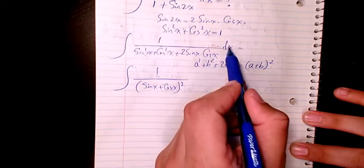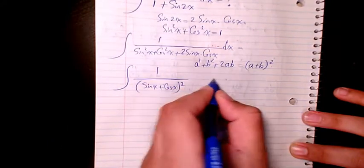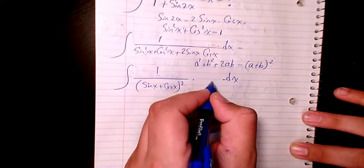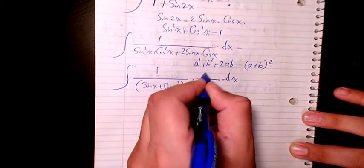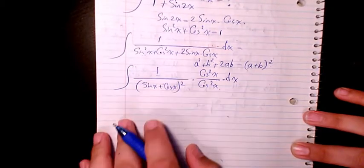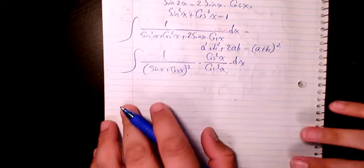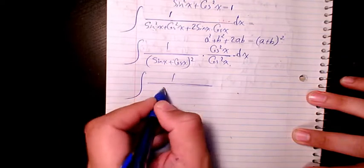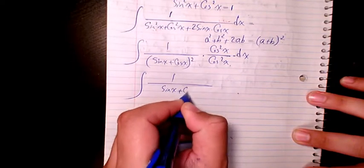I have it here. What I can do is multiply and divide the whole thing by cosine squared x. So then this one goes there, it will be sine x plus cosine x divided by cosine x times 1 over cosine squared x dx.